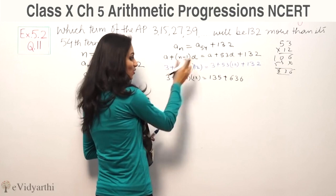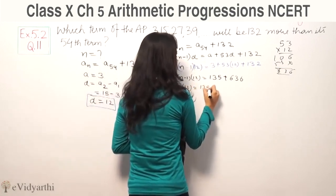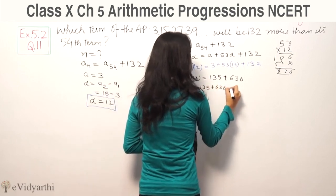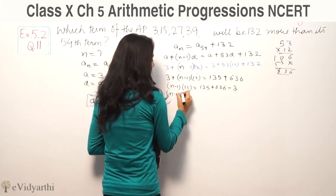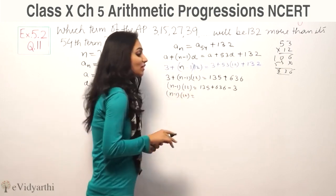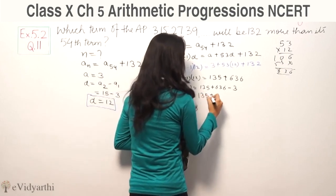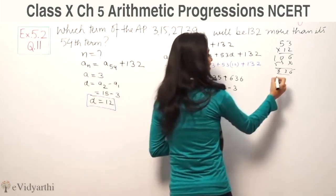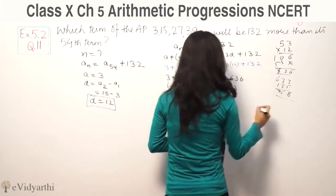Now simplifying, n minus 1 times 12 equals 135 plus 636 minus 3, which equals 768. So we have n minus 1 times 12 equals 768.